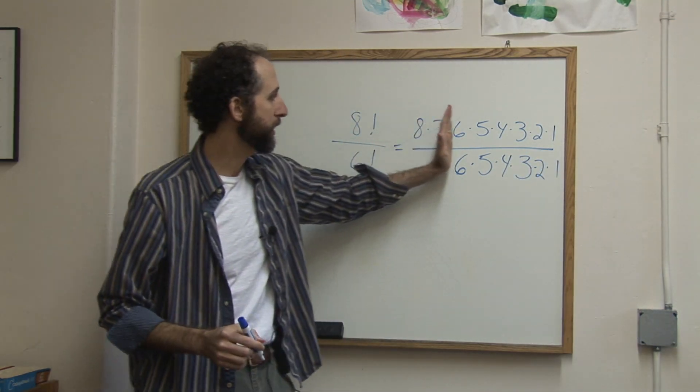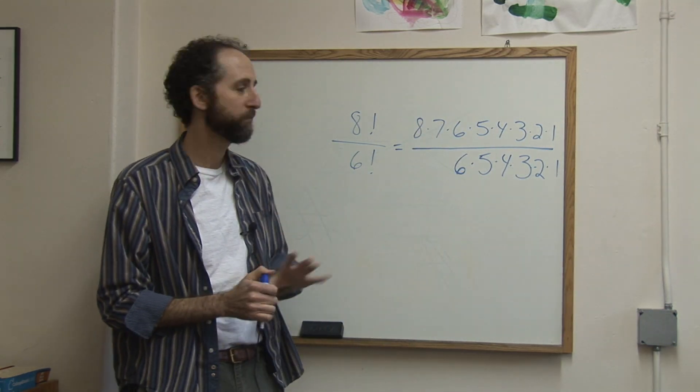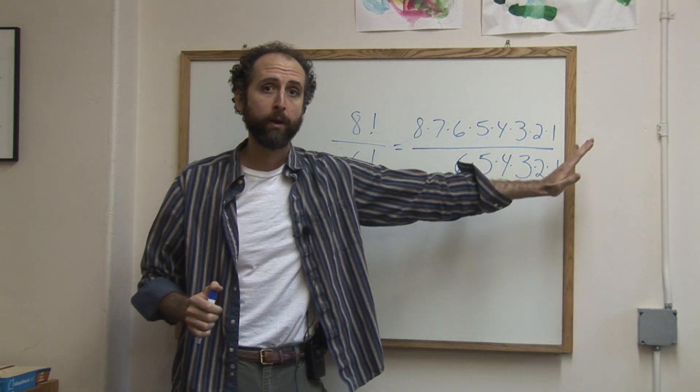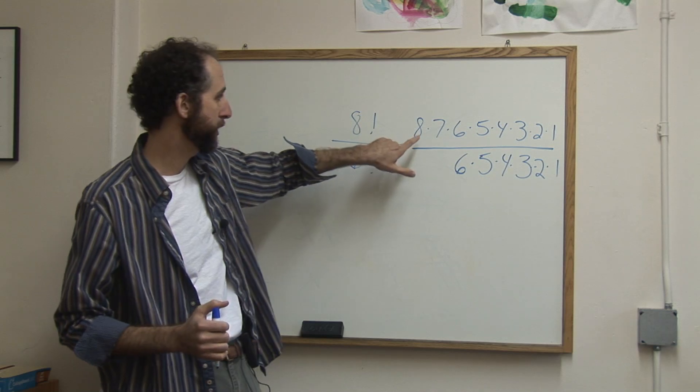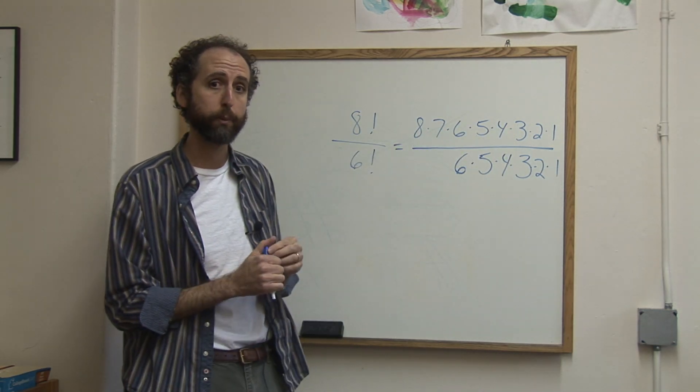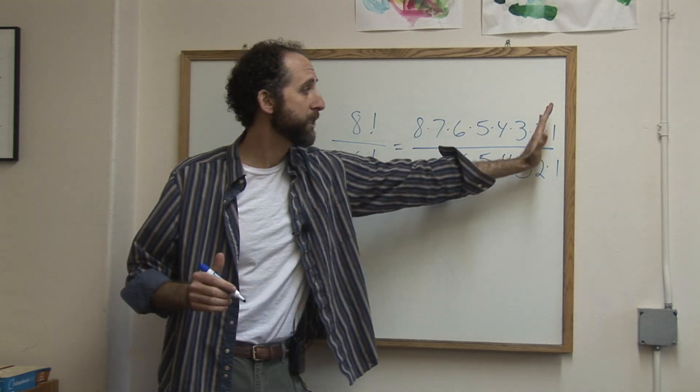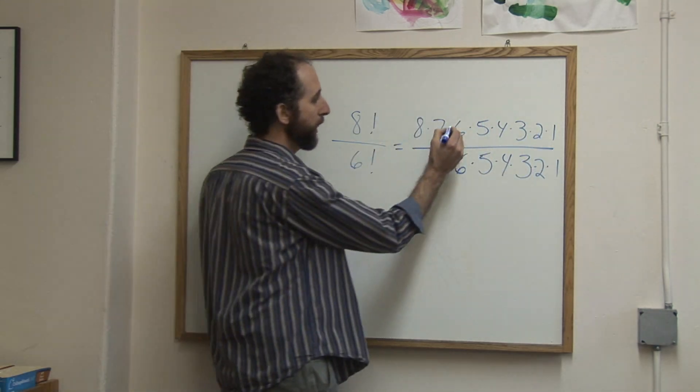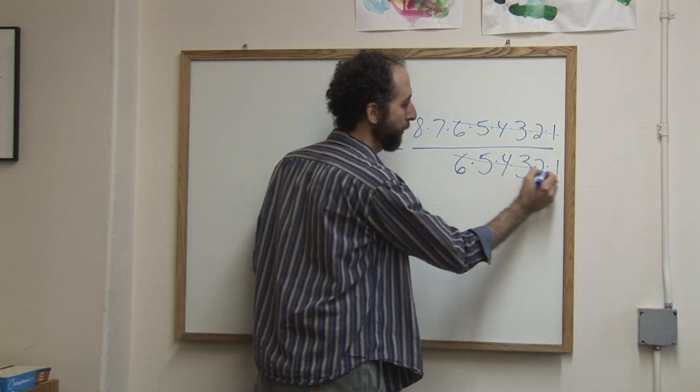Now, because we've got the 6 times 5 times 4 times 3 times 2 times 1 on the top and also on the bottom, and because it's multiplication with no addition or subtraction signs separating these, we can reduce. Because we've got the same thing on the top and bottom, we can actually cancel all of these with all of these.